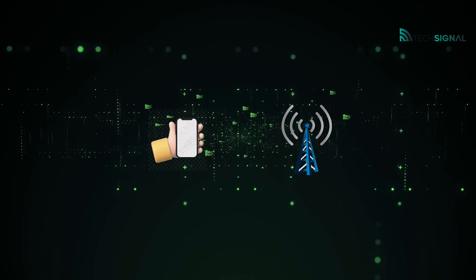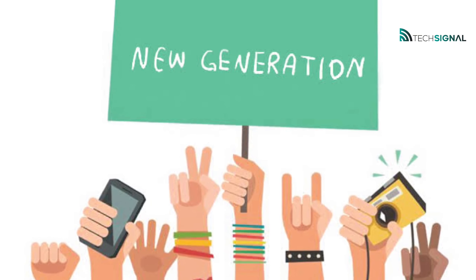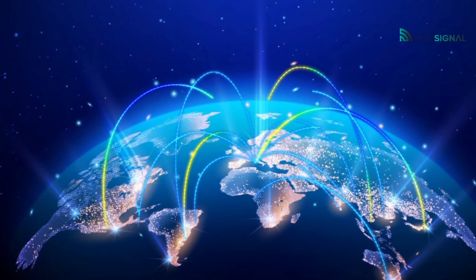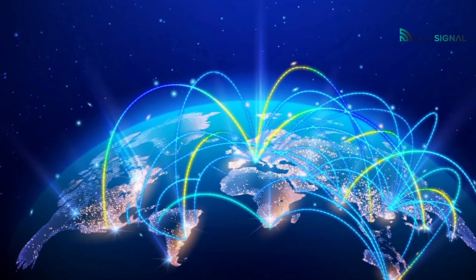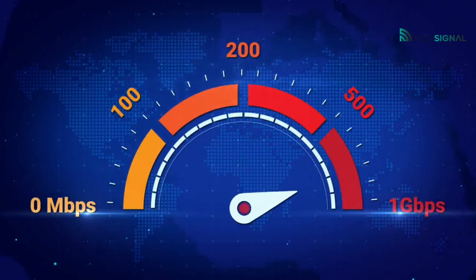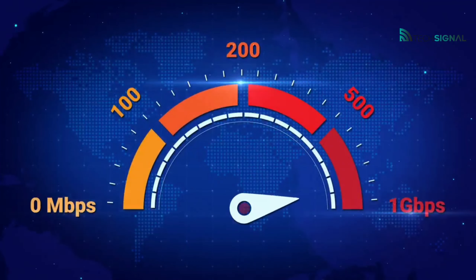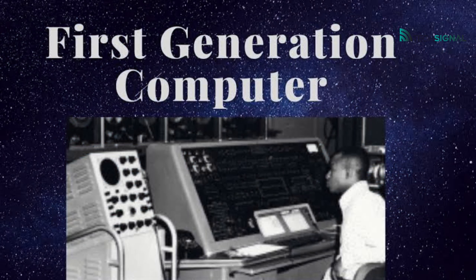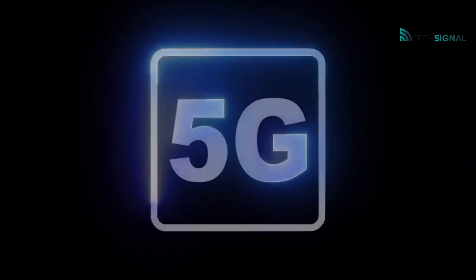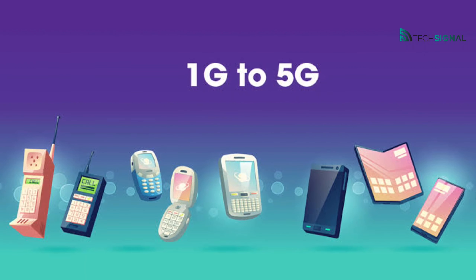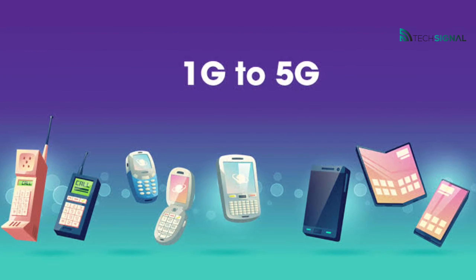As you can imagine, there's a lot of data being transferred back and forth between your phone and the cell tower. So with each new generation of cellular technology, the goal is to make this process more efficient — in other words, faster, with less latency, and able to handle more data. And that's why we leap from one generation to the next, and the latest is, of course, 5G.